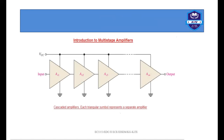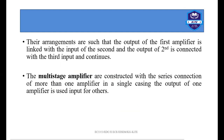You can see amplifiers AV1, AV2, AV3, and so on up to AVn, and at AVn we have the output. This is a cascaded amplifier — each triangle symbol represents a separate amplifier, and VCC is the DC supply. Their arrangement is such that the output of the first amplifier is linked with the input of the second, the output of the second is connected to the third, and it continues. The multi-stage amplifier is constructed as a series combination of more than one amplifier in a single casing.